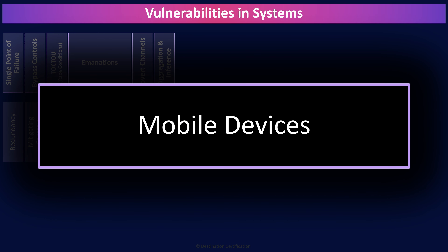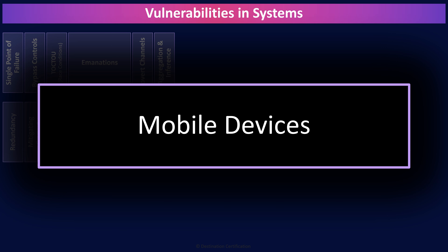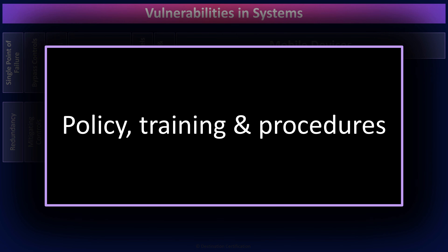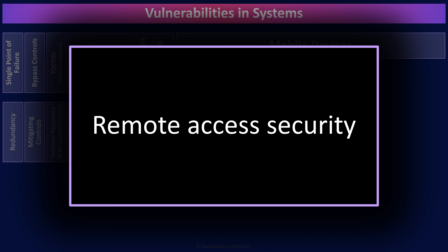Mobile devices are considered a significant vulnerability due to the simple fact that they often contain a significant amount of sensitive information, and they are mobile. They get forgotten on all sorts of seats — taxis, trains, airplanes, latrines — and a misplaced or stolen mobile device has been the source of many a privacy breach. An excellent way of reducing the risk is to have clearly defined policies regarding the acceptable use of mobile devices, specifically requiring that sensitive data not be stored on mobile devices, and having training and procedures in place to ensure the acceptable use policy is understood and followed. Connections from mobile devices back to the corporate network should be encrypted to ensure protection of sensitive data in transit.